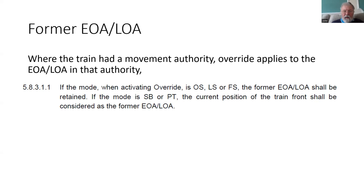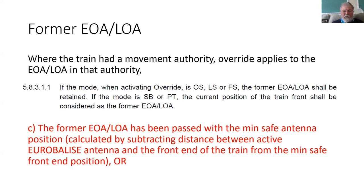However, we have to look at what the text says. One of the things it says is that if you're in OS or LS, then you retain the original end of authority. If, however, you are in standby when you activate override, the front of the train becomes the end of authority — the limit of authority. This is then applied in clause C that we've looked at previously: where if the train considers that the antenna has definitely passed over the location of that end of authority, then there's no longer any need for an override to be active.